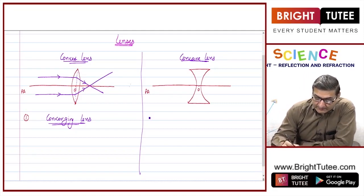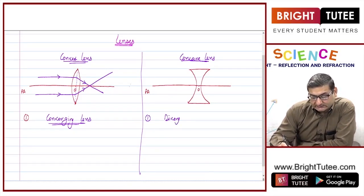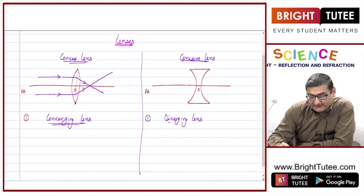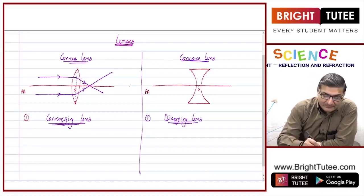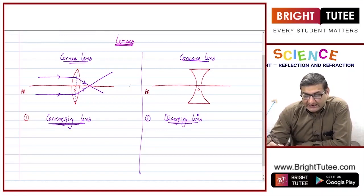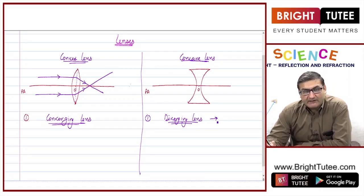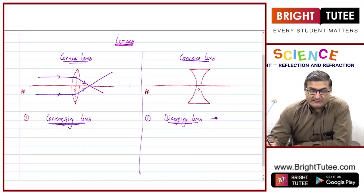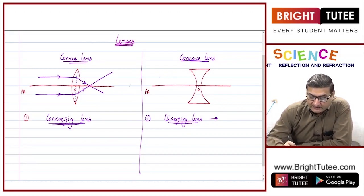But the concave lens is a kind of diverging lens. When I talk about a diverging lens, I mean that the light rays will be going away from the principal axis after passing through this lens. Let us see how. If there is a parallel ray of light coming parallel to the principal axis, we bring it to the imaginary center.